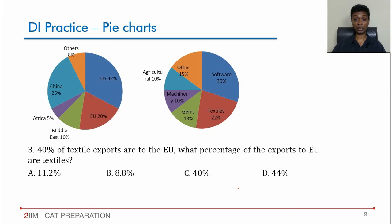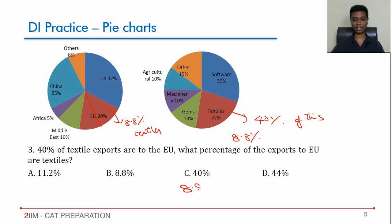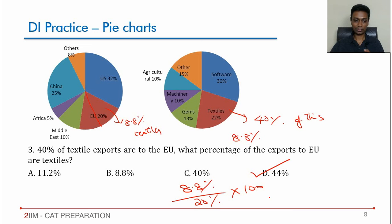Question: 40% of textile exports go to the EU. What percentage of exports to the EU are textiles? Textiles are 22% of overall exports, and 40% of that goes to EU, so textile exports to EU = 40% of 22% = 8.8% of overall. EU is 20% of overall exports, so textiles as a percentage of EU exports = 8.8/20 × 100 = 44%. This is practically a percentages question — very simple.